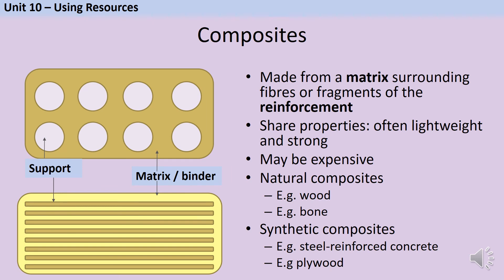There are both natural and synthetic examples of composite materials. Wood is a natural example: it contains soft cellulose found in all plant cell walls, combined with a harder substance called lignin. The lignin fibres form the reinforcement and are surrounded by the cellulose matrix. For a synthetic example, steel reinforced concrete: concrete itself is actually a composite of cement, sand and aggregate. Concrete has good compressive strength — it resists being squashed — but can shatter if bent. Steel reinforcement has good tensile strength and resists stretching and bending, so steel reinforced concrete resists both squashing and stretching.